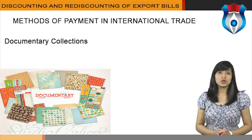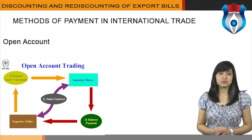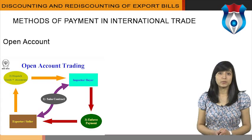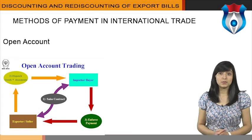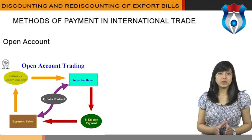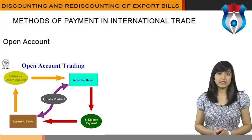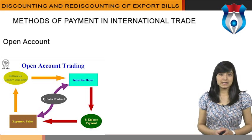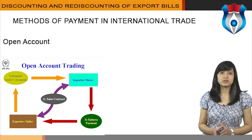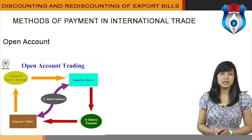An open account transaction means that the goods are shipped and delivered before payment is due, usually in 30 to 90 days. Obviously, this is the most advantageous option to the importer in cash flow and cost terms, but it is consequently the highest risk option for an exporter. Due to the intense competition for export markets, foreign buyers often press exporters for open account terms, since the extension of credit by the seller to the buyer is more common abroad. Therefore, exporters who are reluctant to extend credit may face the possibility of losing the sale to their competitors.